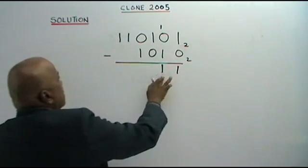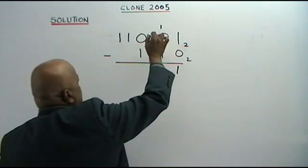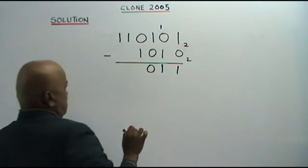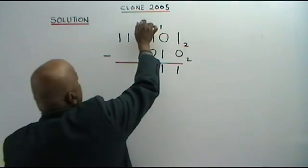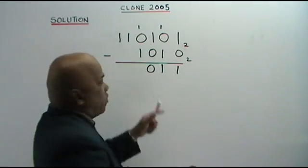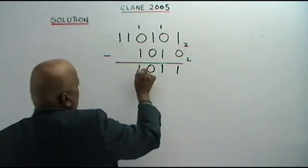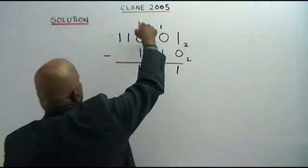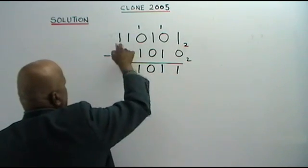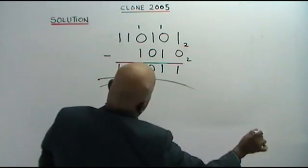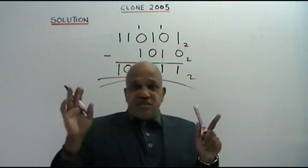You have already carried to the other side — 0 balance. 0 minus 0 is 0. 0 minus 1 — cannot. You borrow 1 here. So 1, 0 is 2. 2 minus 1 is 1. This one you already borrowed here, left with 0. This is 1. This is your answer in base 2.